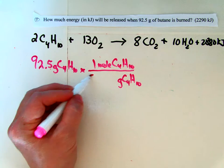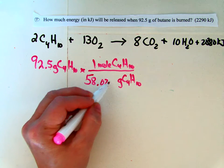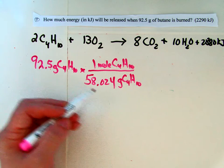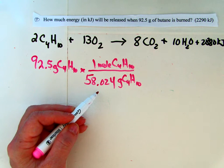And we know from the previous problem, I think it's 58.024 grams of butane per mole of butane. But this time we need to get rid of grams, so we put the grams at the bottom.